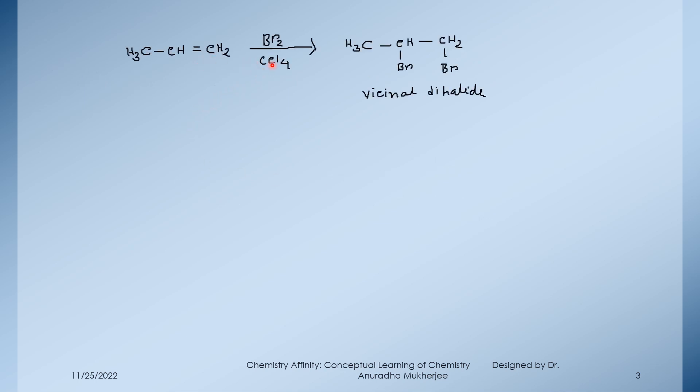First, propene reacts with bromine in presence of carbon tetrachloride. It's an electrophilic addition reaction and two bromines attach with the carbon across the double bond. It is called vicinal dibromide.